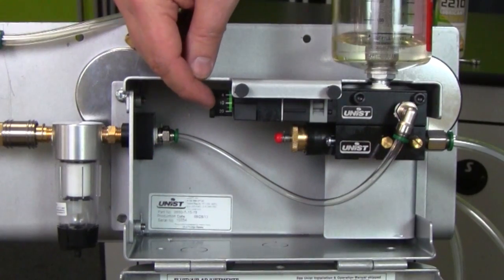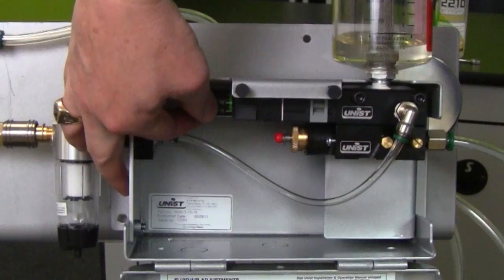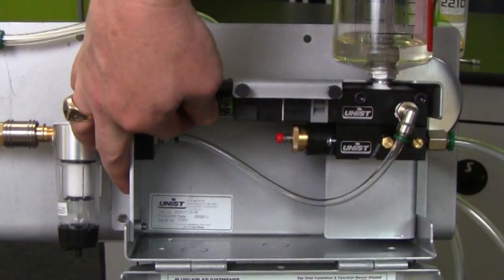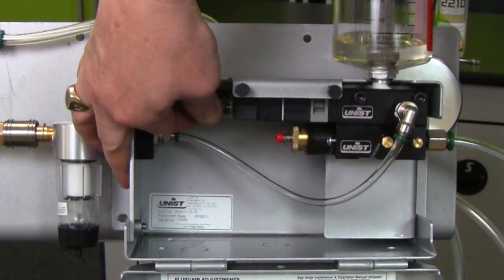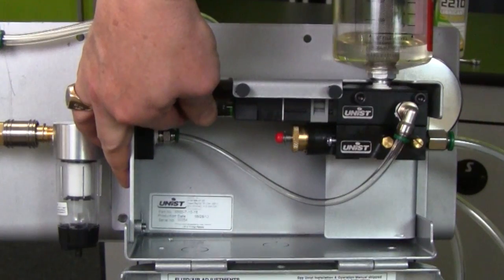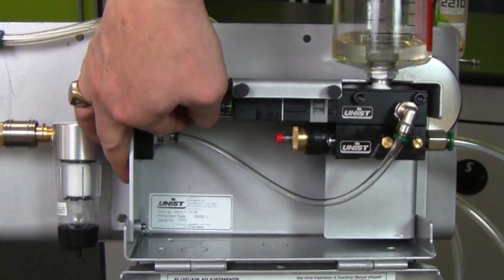The factory setting for the pulse generator is 10 cycles per minute. That's changed by rotating the knob and lining up the dial with the detent on the block here. So you can see we can change that for fewer or more strokes per minute.